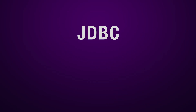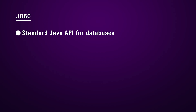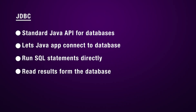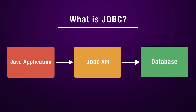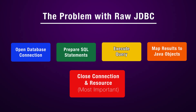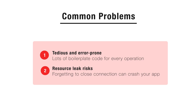At the foundation of all Java database interaction is JDBC, which stands for Java Database Connectivity. JDBC is the standard API that allows a Java application to talk to a database. It provides the ability to connect to a database, execute SQL queries directly, and process the results. Think of it as the fundamental bridge between your Java code and the database. While it is the standard, working with JDBC directly can be tedious and error prone. You have to manually manage every step: opening the database connection, preparing the SQL statements, executing the query, mapping the results to your objects, and most importantly, closing the database connection and other resources. This manual process creates a lot of boilerplate code and introduces significant risks. For example, if you forget to close the database connection after you are done, it can lead to a resource leak that can crash your entire application. This is a common headache for developers, and is where modern solutions come into play.